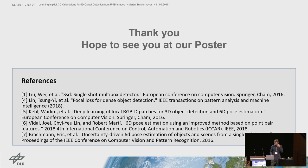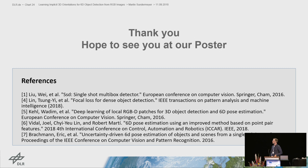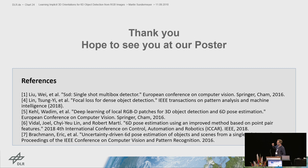During Q&A, an audience member noted the demo used a fairly uniform background and asked whether a complicated background would create problems. The presenter explained that the encoder handles this well: the reconstructions from test images are free from background, so the autoencoder is able to segment the object from the background effectively.